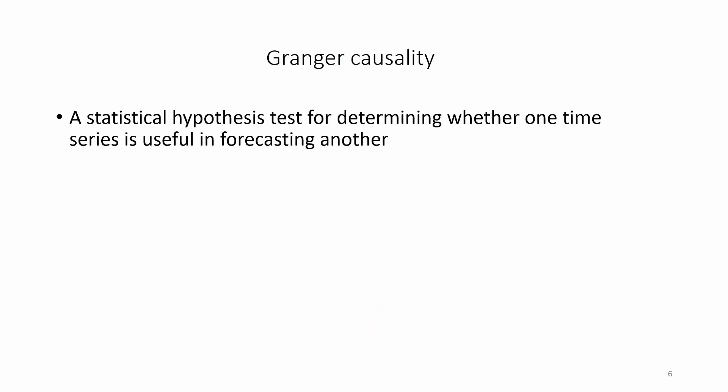Granger causality is a statistical hypothesis test for determining whether one time series is useful in forecasting another. Granger causality gets its name from the pioneering work by Clive Granger, published in 1969. Clive Granger was awarded the Nobel Memorial Prize in 2003 for his contributions to time series analysis.